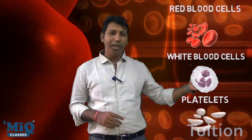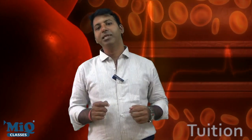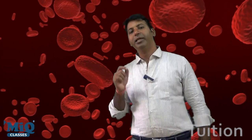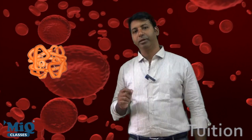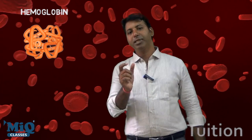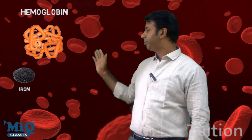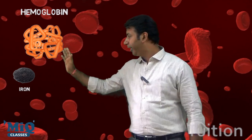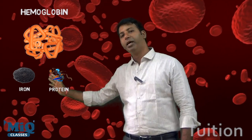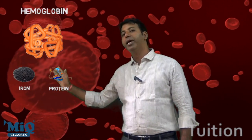Let me discuss only about the RBC cells now. RBC cells are very minor cells and they contain the red color pigment called hemoglobin. If you split hemoglobin into two parts: heme means iron, and globin is a protein. These iron contents are very much necessary for us.